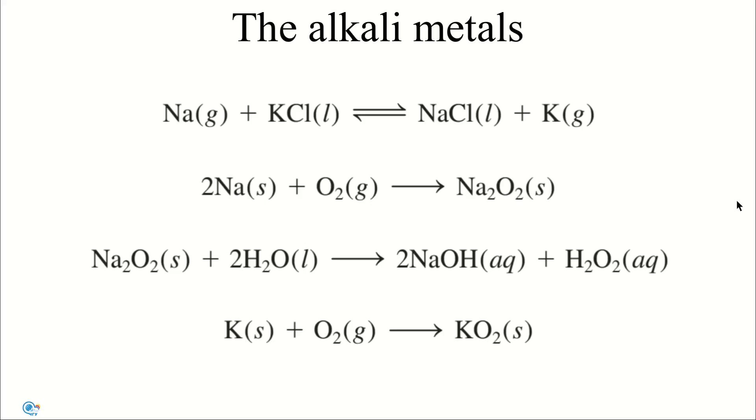Instead, it's usually obtained by distillation of molten potassium chloride in the presence of sodium vapor at approximately 900 degrees. The reaction may seem strange given that potassium is a stronger reducing agent than sodium. However, potassium has a lower boiling point than sodium, so it's more volatile at 900 degrees and distills off more easily.